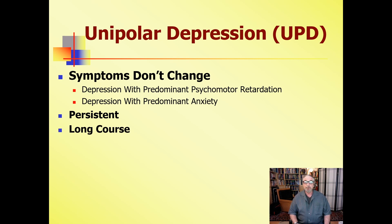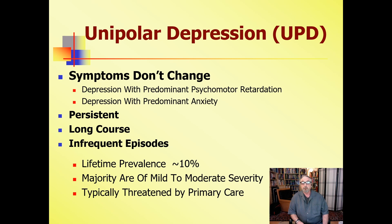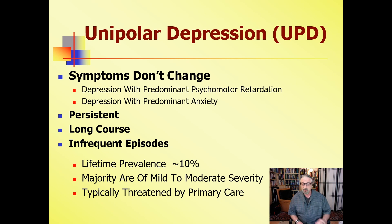People have infrequent episodes. If you have a course of depression that lasts a year, you may not have another one for five to ten years. The lifetime prevalence is 10%, and the majority are mild to moderate severity, so most get treated by primary care. If you have a single episode of unipolar depression, you have a 50% chance of having another episode. Two episodes: around 75%. A third episode: 90–95% probability you will have another episode. This is important when thinking about long-term maintenance treatment.